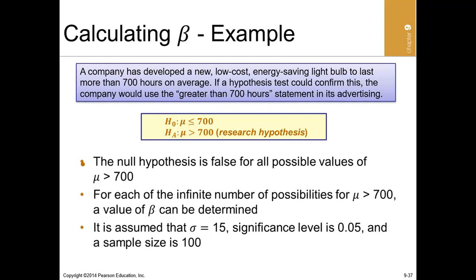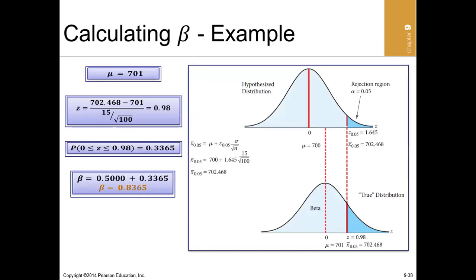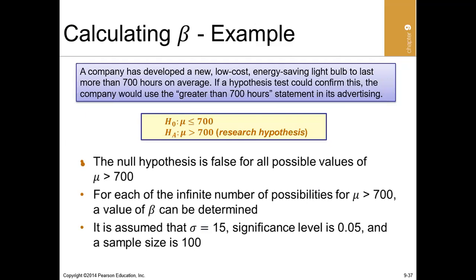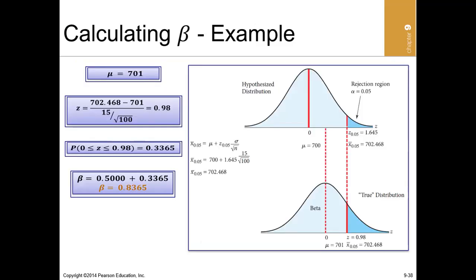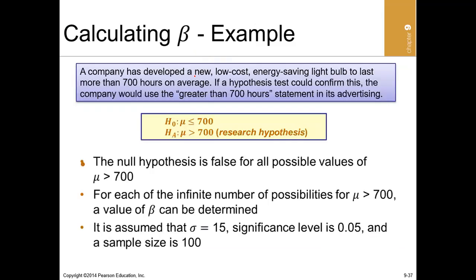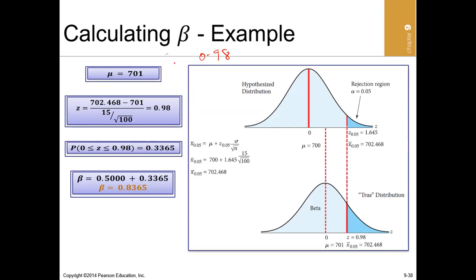For this question, the mean is 700. We test the hypothesis and compute the p-value. The computed z-value is 0.98 for a one-tailed test. When we read the p-value of this z from the table, we get 0.8365. The observed p-value is the alpha.